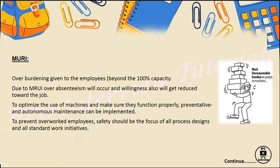The last one is Muri, which means overburden. Again, using the example of a BPO company: there are 15 employees in one team, and one employee is getting extra load beyond his 100% capacity. What will happen? The willingness to work for that resource will go down, he will not be able to do his work properly, and sometimes he may even resign. Many things can go wrong when we increase the burden on one single employee rather than dividing the work among all 15 employees. All work should be equally divided between all employees.